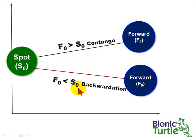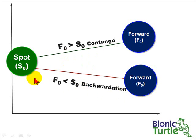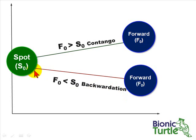On the other hand, if the forward price is less than the spot price, or if distant forward prices are less than near term forward prices, we have what is called backwardation. This is also typically called an inverted forward curve.